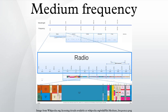Frequencies immediately below MF are denoted low frequency, while the first band of higher frequencies is known as high frequency. MF is mostly used for AM radio broadcasting, navigational radio beacons, and maritime ship to shore communication.